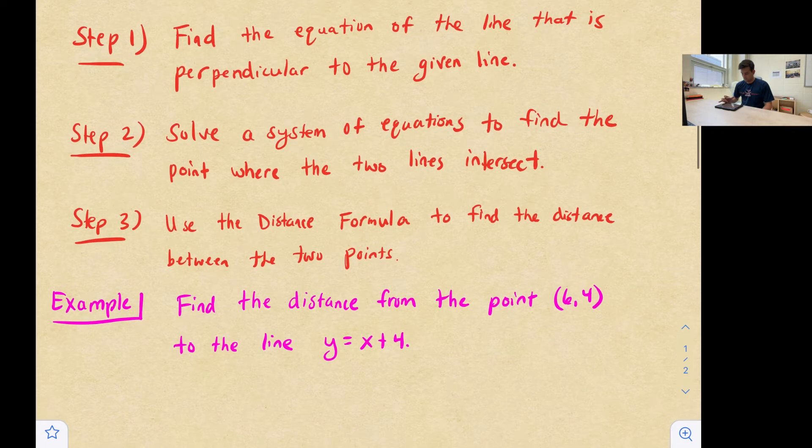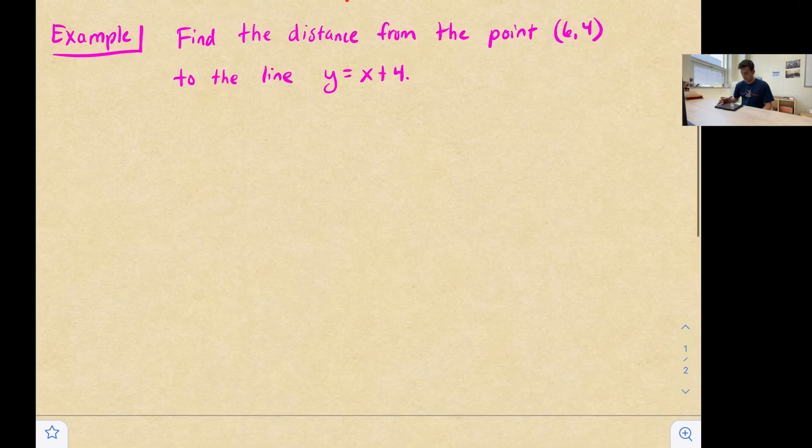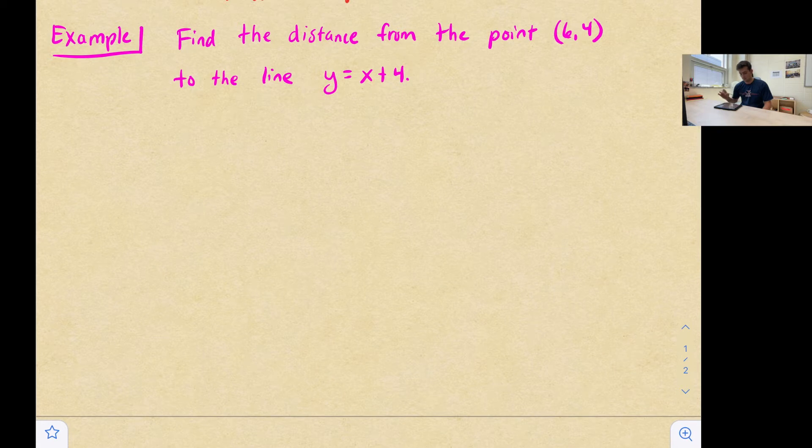We're going to look at an example, and we're going to follow these three steps. So here's our example. We want to find the distance from the point six comma four to the line y equals x plus four. Okay, so our first step, we want to find the equation of the line that's perpendicular to y equals x plus four.